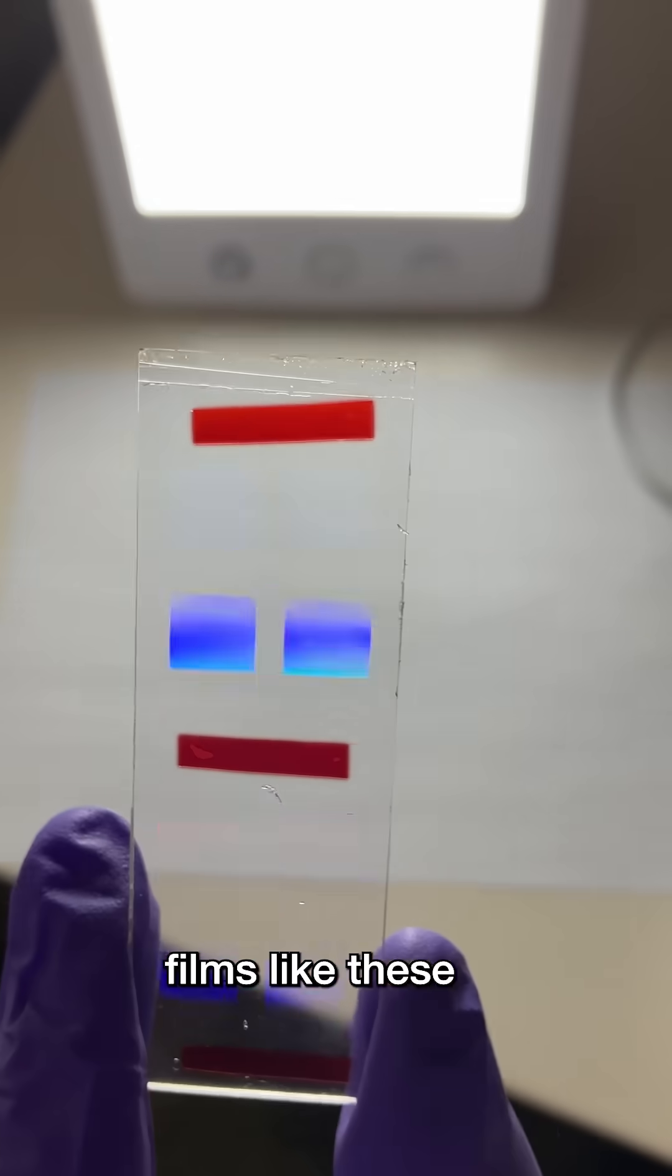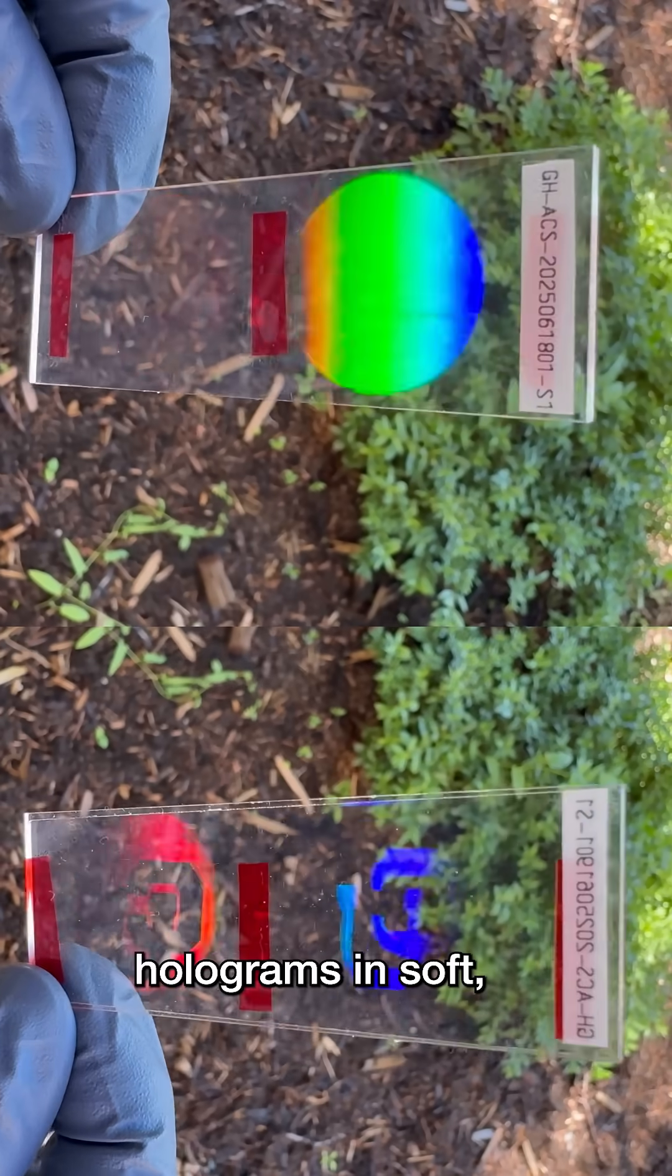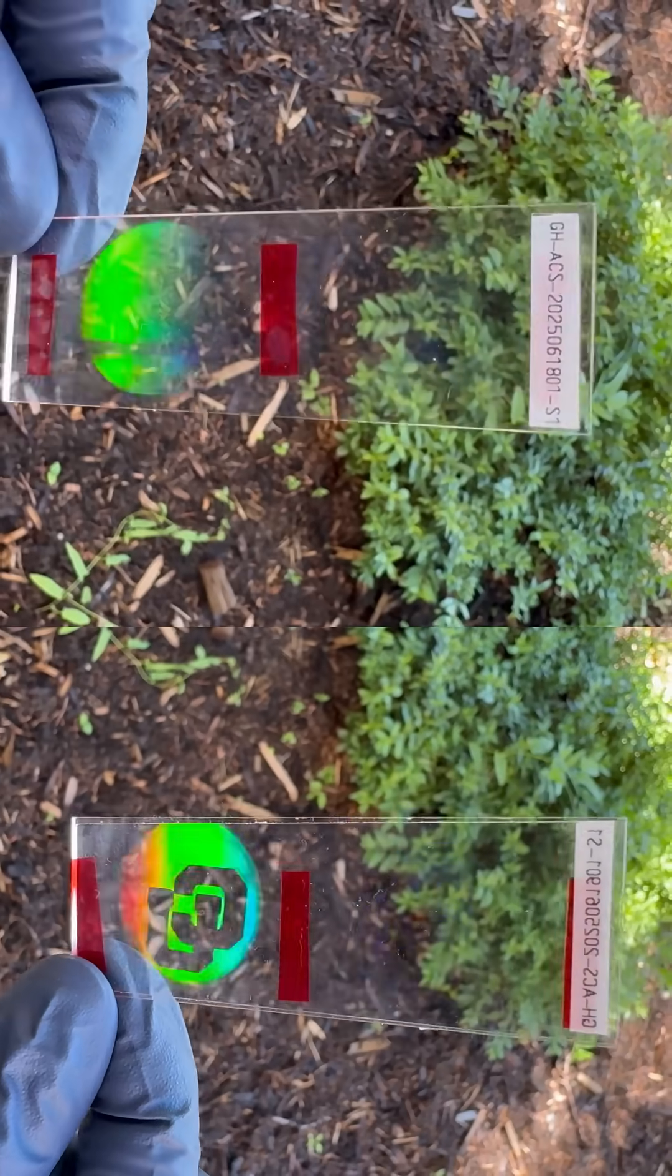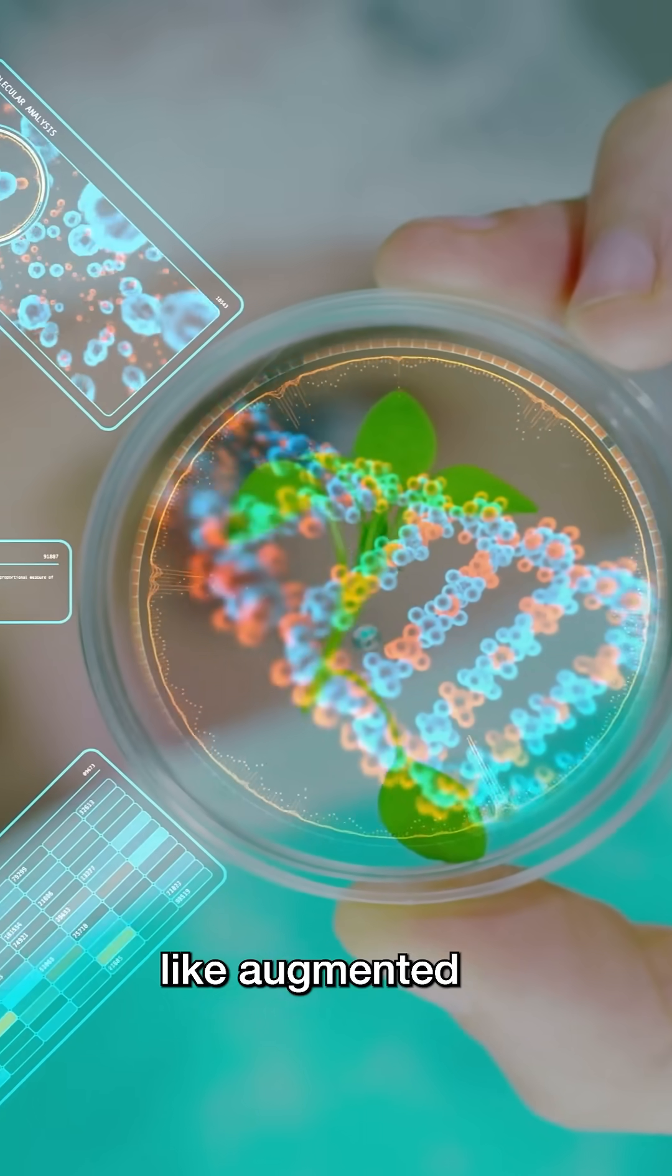Super thin holographic films like these have had a big problem for 30 years. Scientists can only make the holograms in soft rubbery materials, but those floppy films aren't stable enough for useful applications like augmented reality screens.